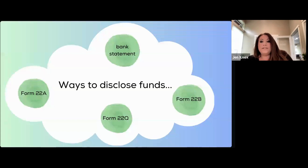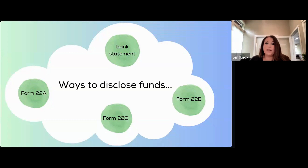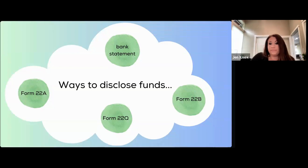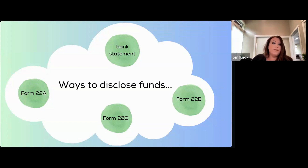So how do we disclose this? We're required to disclose where all of the money to fund the sale is coming from. The purchase and sale agreement says unless otherwise noted, all funds are non-contingent and readily available — they are cash. There are several ways in our contract that we can disclose where funds are coming from.